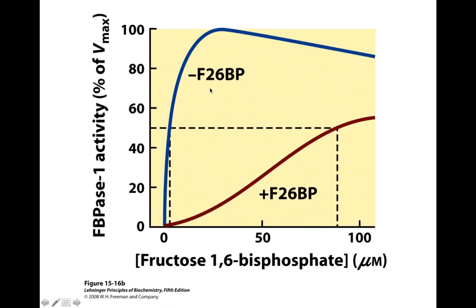On the very next slide, what happens if we don't have F2,6-BP? If our levels of F2,6-BP are low, it's going to activate gluconeogenesis. This is our FBPase activity, or our fructose 1,6-bisphosphatase activity. Those two enzymes represent one of our irreversible steps — that's going to be our reciprocally regulated step. This is an important allosteric regulator of glycolysis and gluconeogenesis.